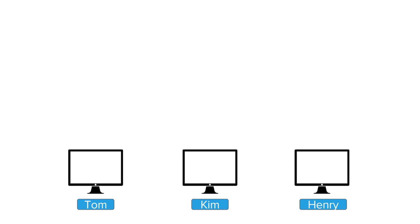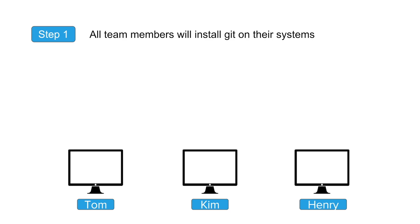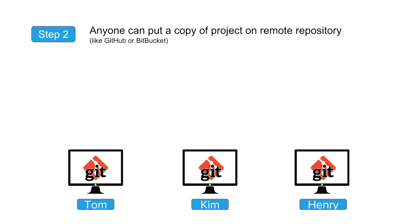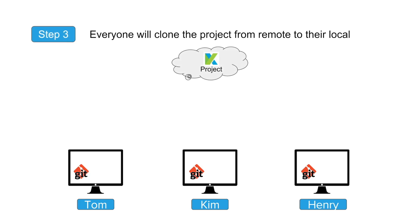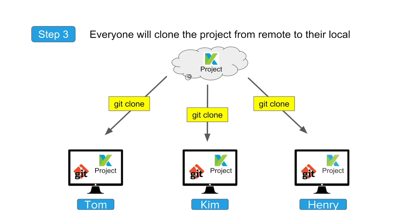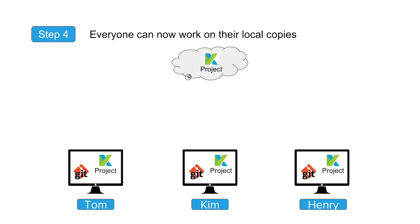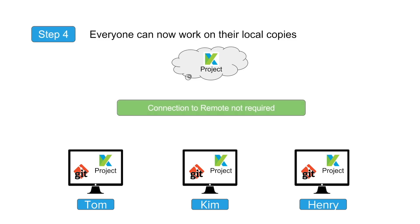Let us look at the detailed steps. This is Tom's system, Kim's system, and Henry's local system. Step one: all members will install Git on their system — Tom, Kim, and Henry. Step two: any one of them can put their project to a remote repository like Bitbucket or GitHub. Step three: everyone will clone the project from the remote repository using Git clone, so Tom, Kim, and Henry each get a local copy. Step four: everyone can now work on their local copies. While working locally, they do not need to stay connected to the remote repository — even without an internet connection they can still work. Network connection is required only at the time of cloning, pulling, or pushing.